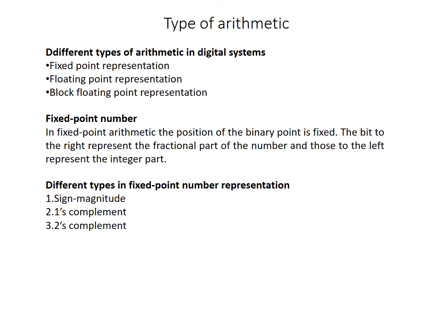First we go for the fixed point numbers. In fixed point arithmetic, the position of the binary point is fixed. The bits to the right represent the fractional part of the number and those to the left represent the integer parts. Different types of fixed point number representations are sign magnitude, one's complement, and two's complement.